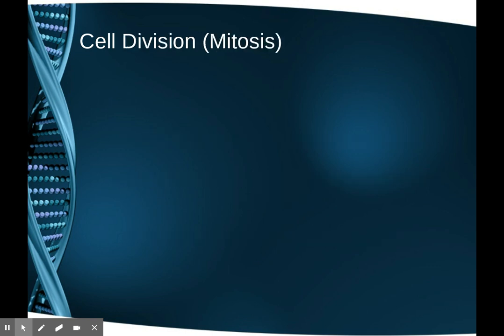In order for a cell to make another cell, it has to divide — it has to split in two. This is one of the rare cases where division and multiplication mean the same thing. Cells multiply by dividing themselves into two, and this process is called mitosis.